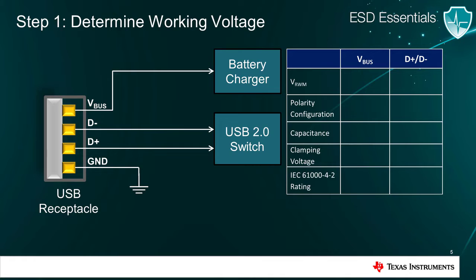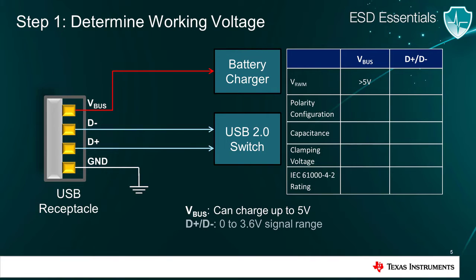The first step is to look at the voltage range of the lines. For USB 2.0, VBUS can go as high as 5 volts, so we know that the working voltage of the ESD diode must be 5 volts or slightly higher. During normal operation, the D+ and D- lines transmit data with a differential signal that falls between 0 to 3.6 volts. Therefore, the working voltage should be 3.6 volts or slightly higher.